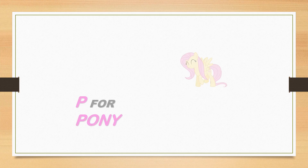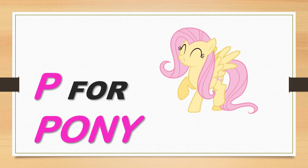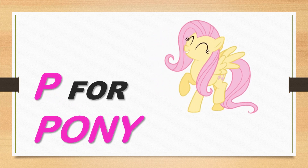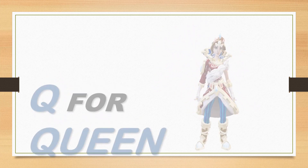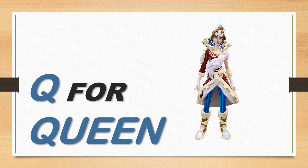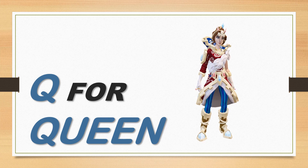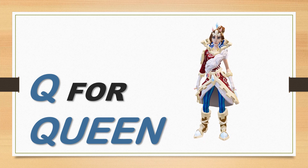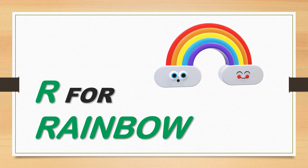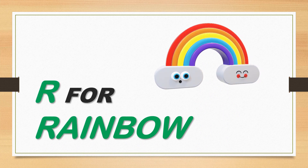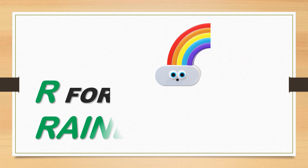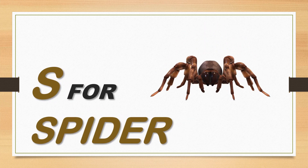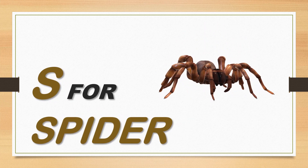P is for pony. P, pony. P, pony. P, pony. Q is for queen. Q, queen. Q, queen. Q, queen. R is for rainbow. R, rainbow. R, rainbow. R, rainbow.